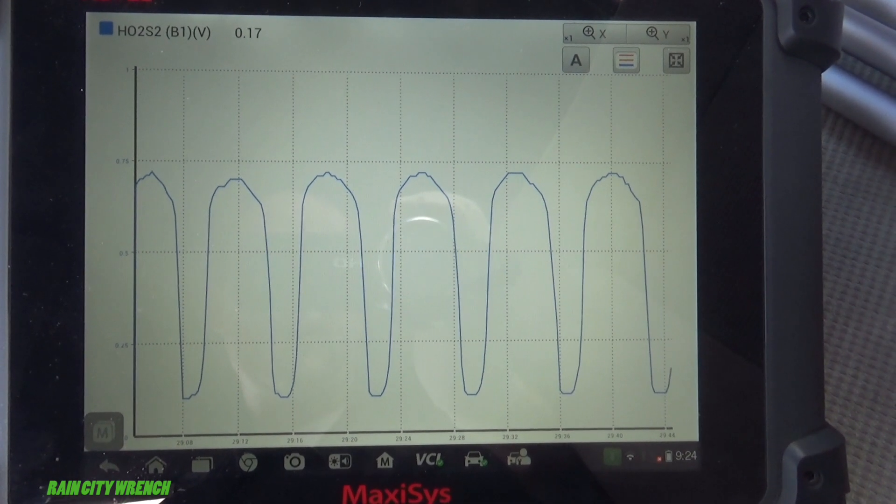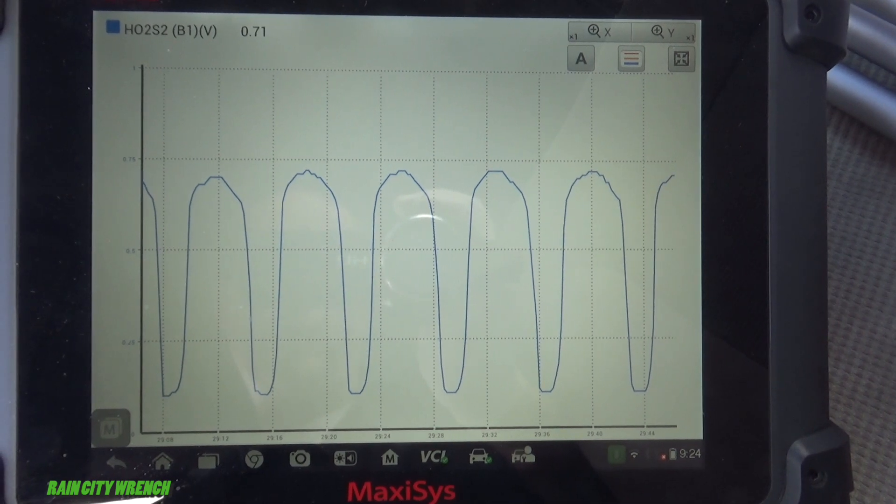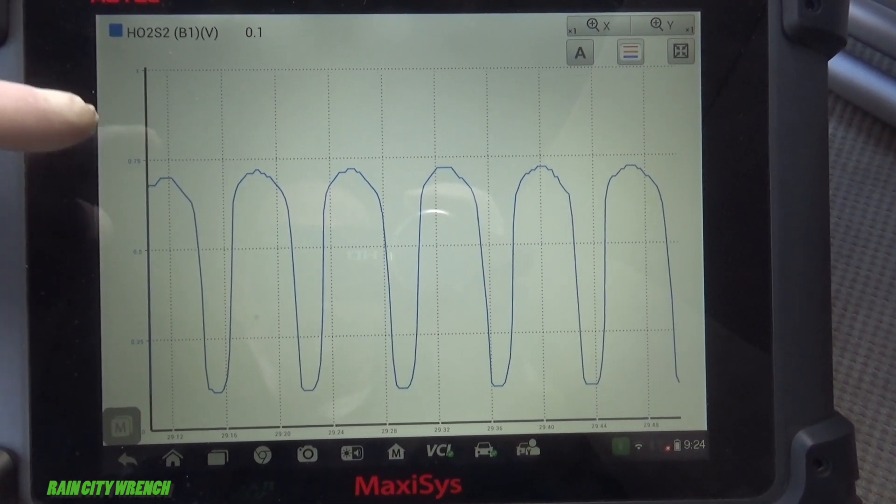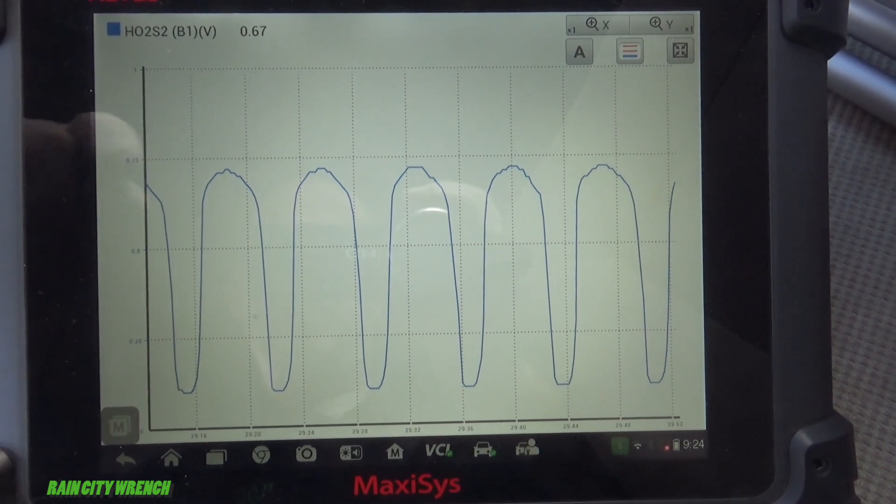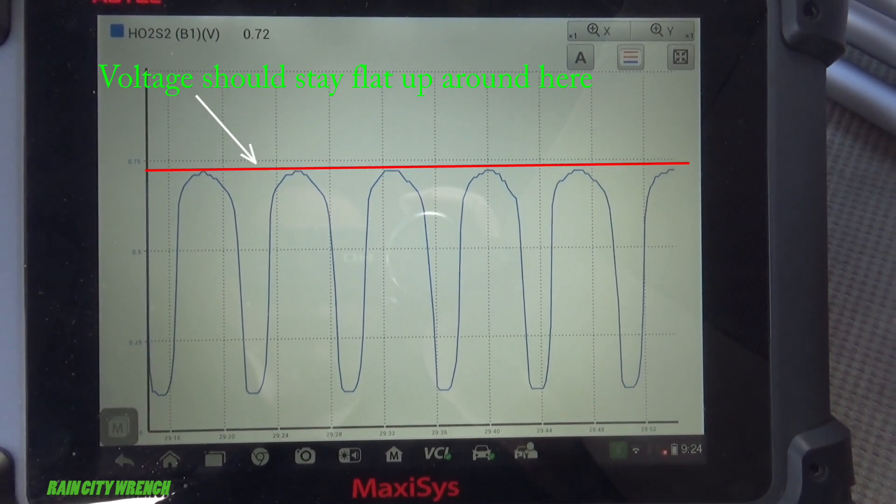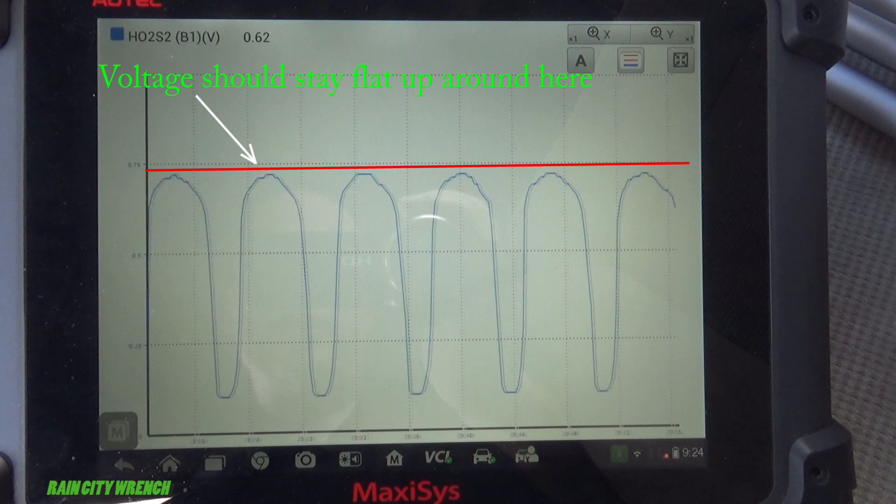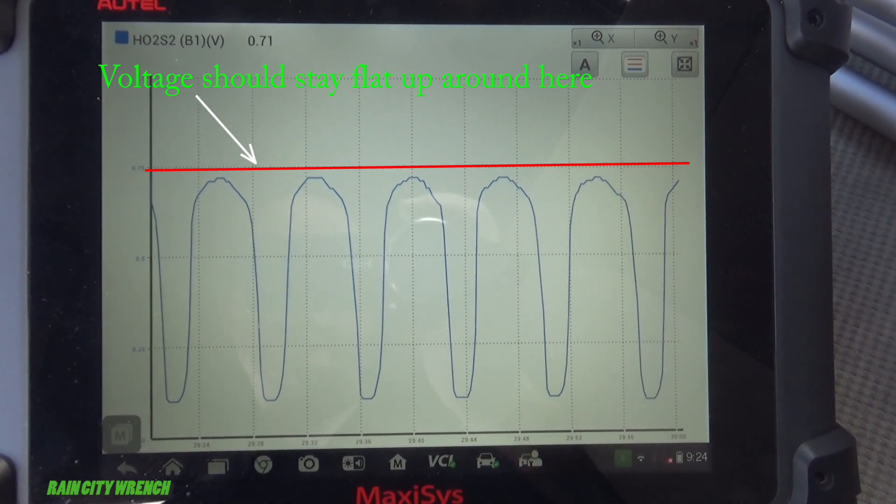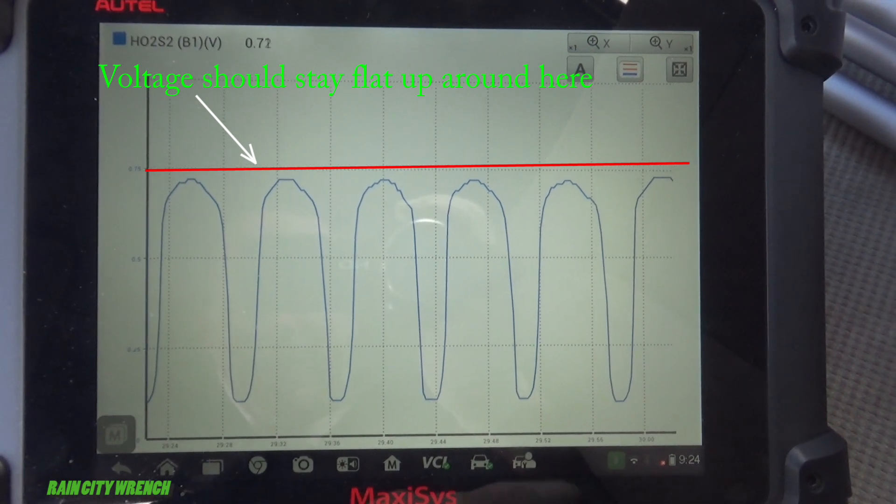If it looks like that, you've got a catalytic converter that's dead. It's not working at all. The pattern should probably stay fixed around 700 millivolts, somewhere up there, because all the oxygen is burnt up and so it's going to read high voltage. We can back out of here.